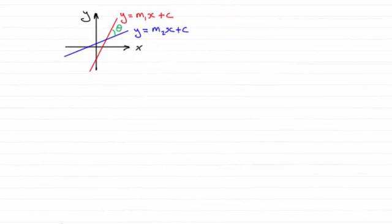Hi. Now, in this video I want to show you how you can go about finding the acute angle, let's say theta, between two straight lines. And let's say those lines have the form y equals m1x plus c and y equals m2x plus c, where m1, m2 are the respective gradients of each line.